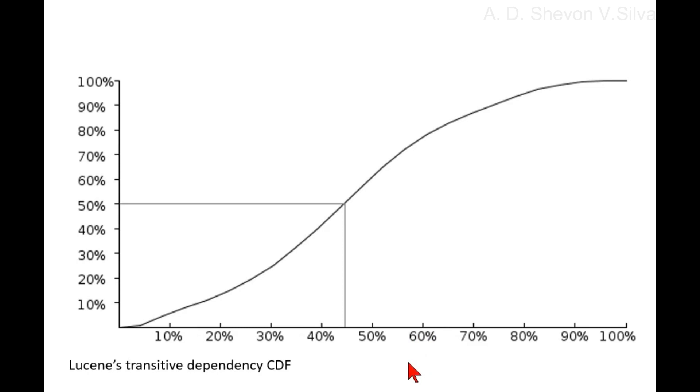The first measures Lucene's attempt to limit the number of dependencies that are possible to form. Second and third attempt to capture transitive dependency length, and fourth attempts to capture the number of transitive dependencies.